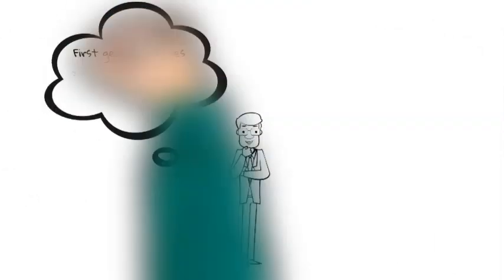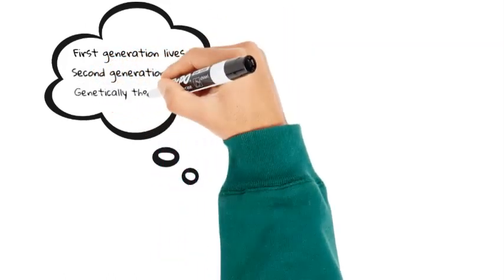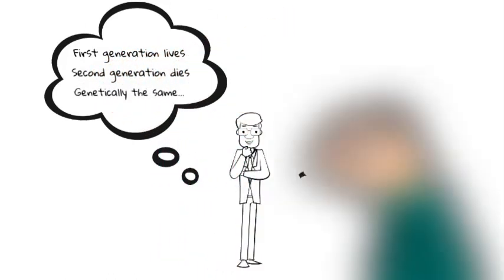So here was a puzzle. The first generation without the protein tail lives, but the second generation dies? Neither of them has the guiding tail. So what can explain the difference?